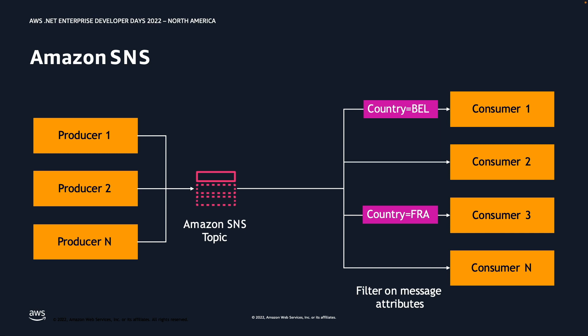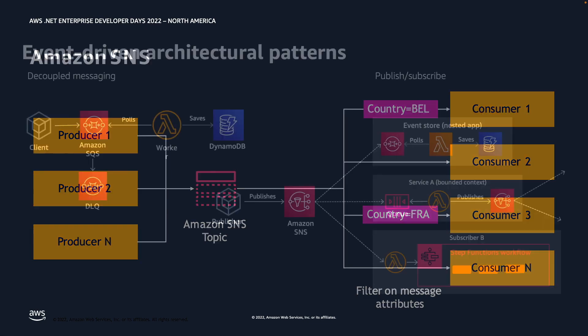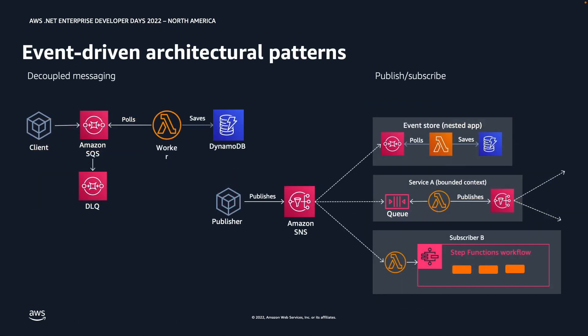I've personally seen some enterprise service buses running on-premise that do not support this filtering capability. Before, we actually had to crack open the message, look inside it, and then perform filtering — a very inefficient approach. With SNS message attributes, we do not have to open the message structure at all.